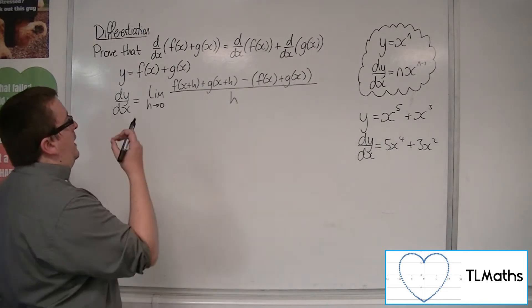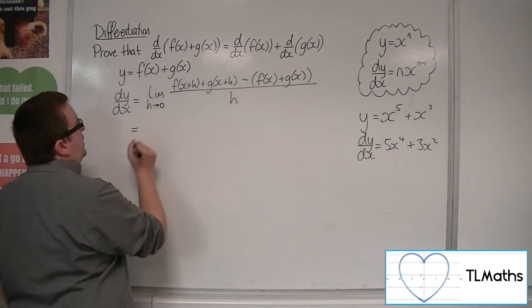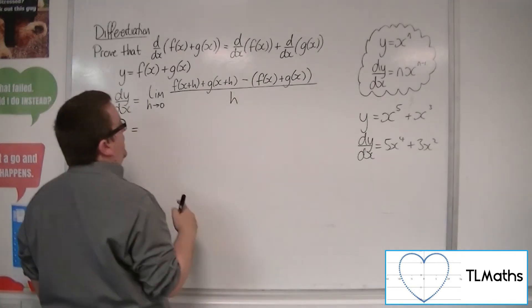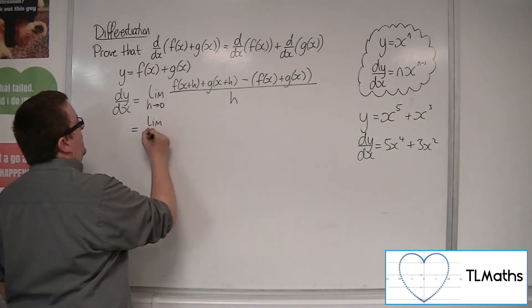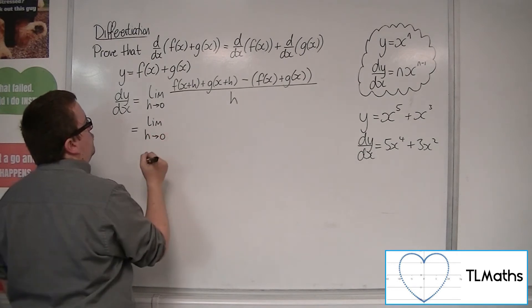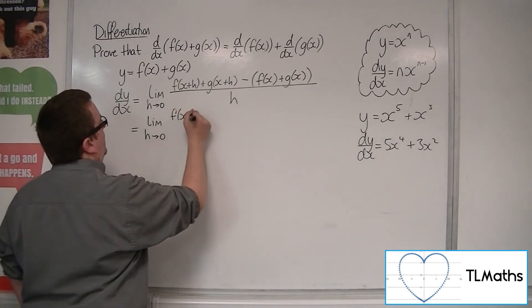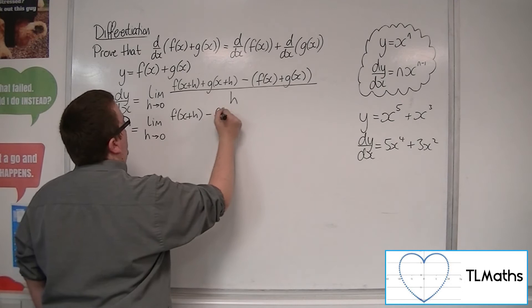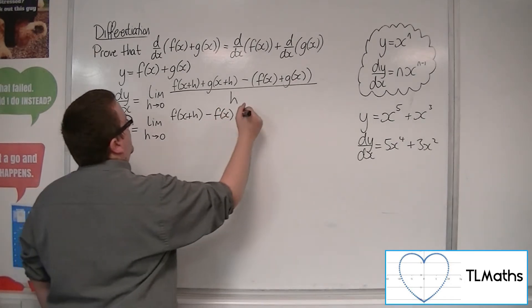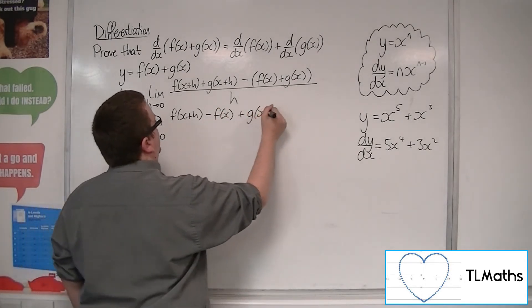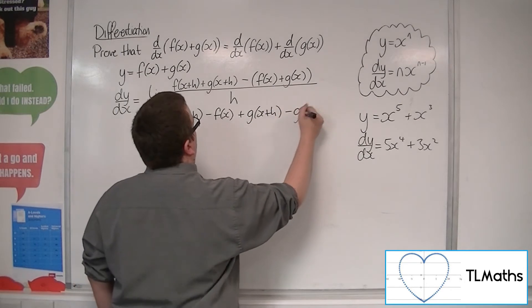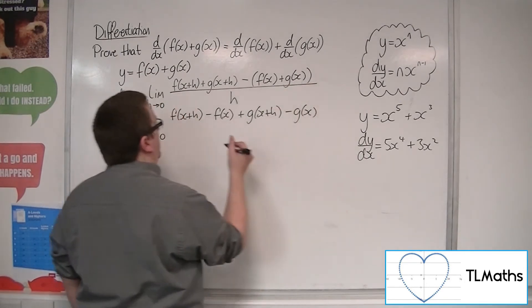Now, in order to do that, what I can do is I can reorder what's in the numerator. So I could rewrite this as the limit as h tends to 0 of f of x plus h, take away f of x, plus g of x plus h, take away g of x, multiplying that bracket out.